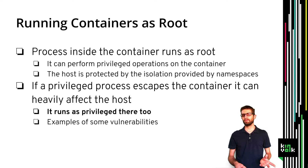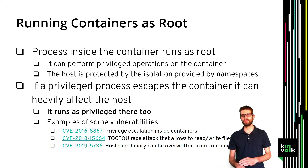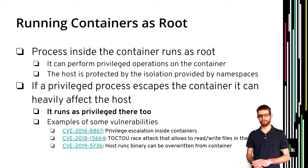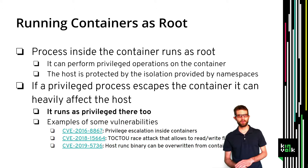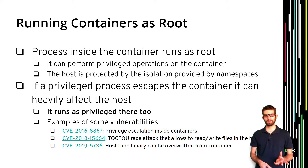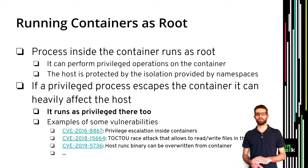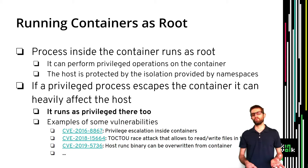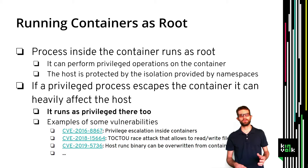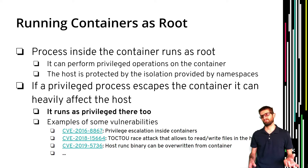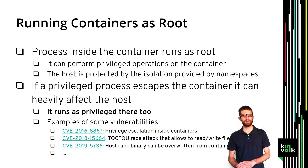These are some examples of vulnerabilities found in the last year that could have been mitigated by user namespaces. The last one is especially critical — in this case an attacker is able to overwrite the runc binary on the host by just using a special container image, giving the attacker full control over the host machine. These are just some examples, and we think it is very probable that more vulnerabilities will be found in the future, and there may be current vulnerabilities already being exploited.